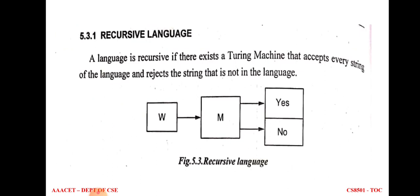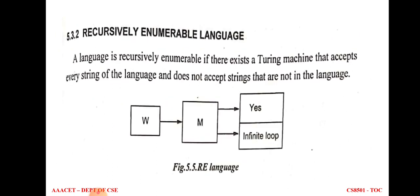A language is recursive if there exists a Turing machine M which accepts every string W of the language and rejects strings not belonging to the language, returning yes or no — the Turing machine always halts with either yes or no. A language is recursively enumerable if there exists a Turing machine that accepts every string belonging to the language, but does not accept strings not belonging to it. If the input string does not belong to the language, the Turing machine goes into an infinite loop and never halts; it only halts for input strings that belong to the language.